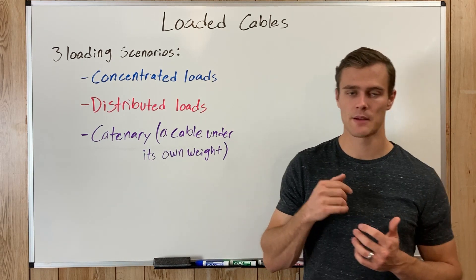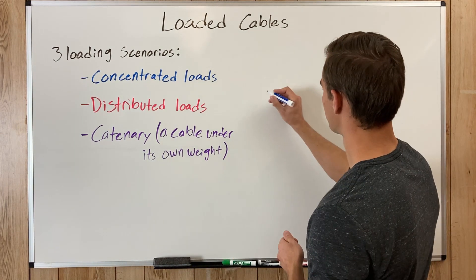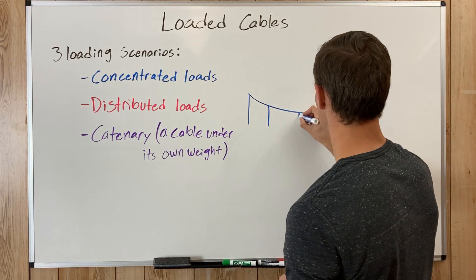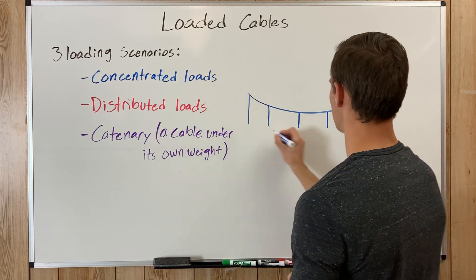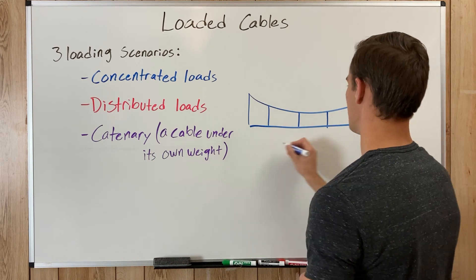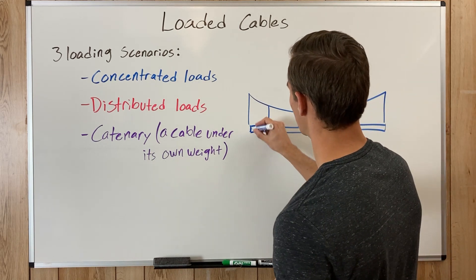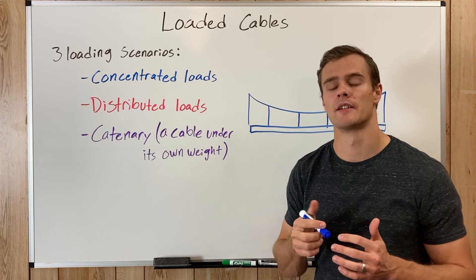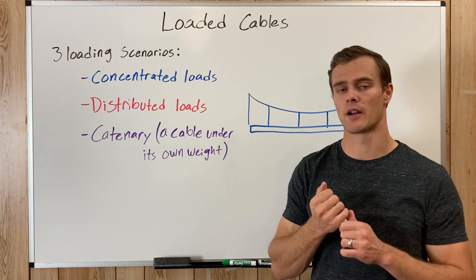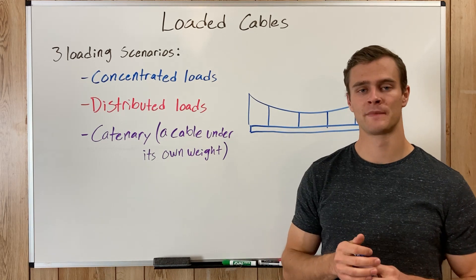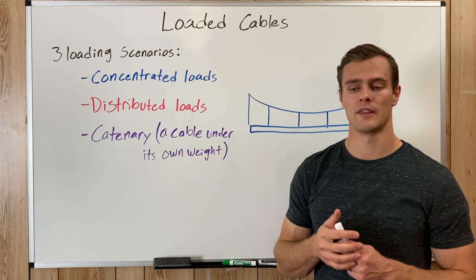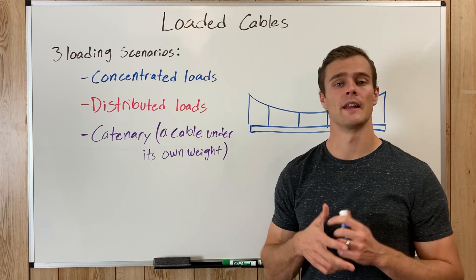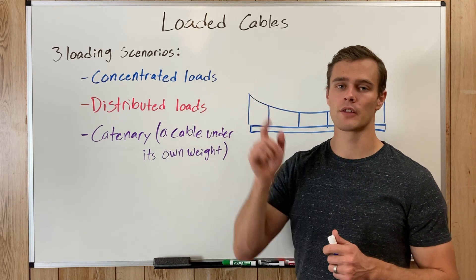Distributed loads involve a cable hanging under a load that is pulling down equally at all points on the cable in the vertical direction — something like holding up a beam for a bridge or a road. The way you solve for those is using equations, and it gets pretty complicated, but they are solvable. If you want a video explaining more of that along with the equations, you can click on the video link.